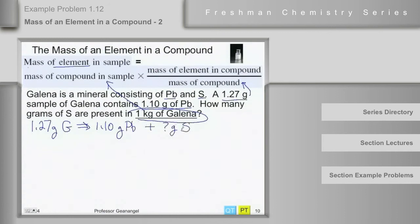And as you can see, the only things that are present in galena are lead and sulfur. So to figure out the mass of the sulfur, all we have to do is take the difference. The mass of sulfur will be equal to the mass of galena minus the mass of the lead. And that's 1.27 minus 1.10. And so these are grams. So that's 0.17 grams of sulfur.